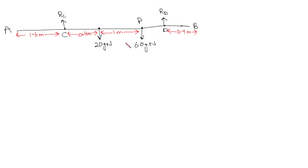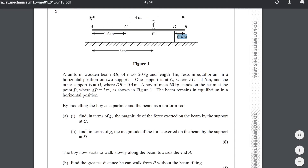We can find the distance from P to D: since AP = 3 m, PB = 1 m, and DB = 0.4 m, so PD = 1 − 0.4 = 0.6 m. At the end, add all distances to verify they total 4 m, since that is the length of the beam.